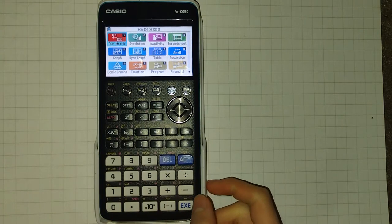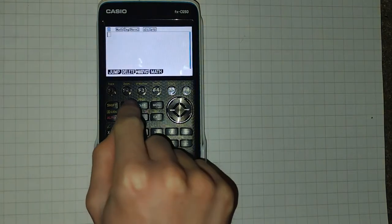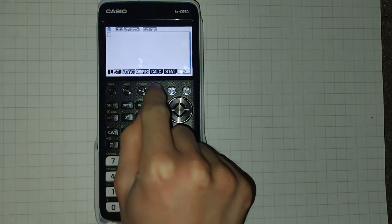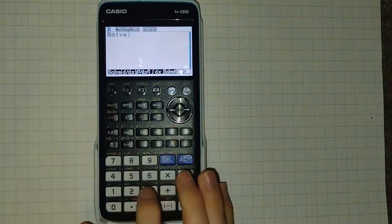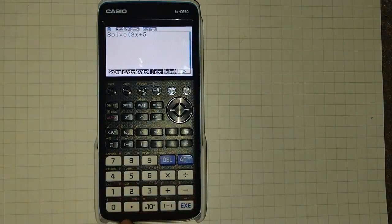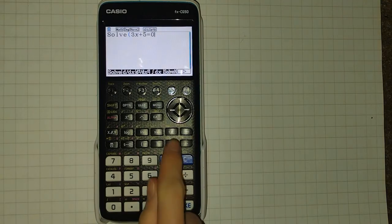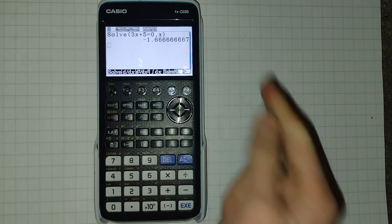We're going to start by looking at solving them in the run matrix mode. To do so, press option, then F4 for calc, and then we could use F1 for solve, and then we can enter our equation, say 3x plus 5. To get equals we press shift and then the point, zero, and then we can say we want to solve for x, and execute, and it gives us an answer.